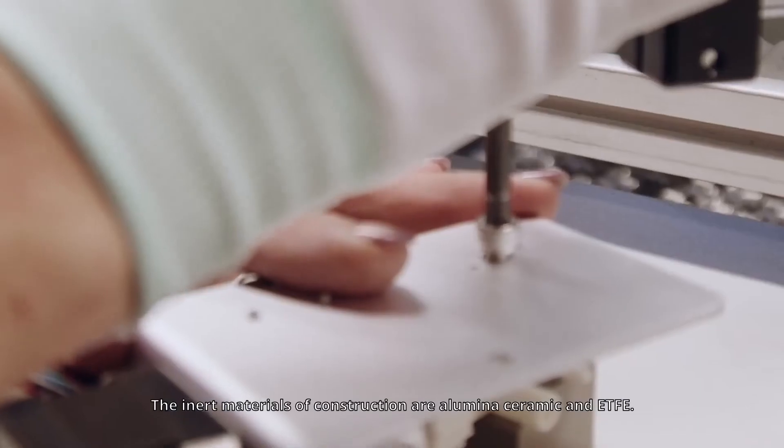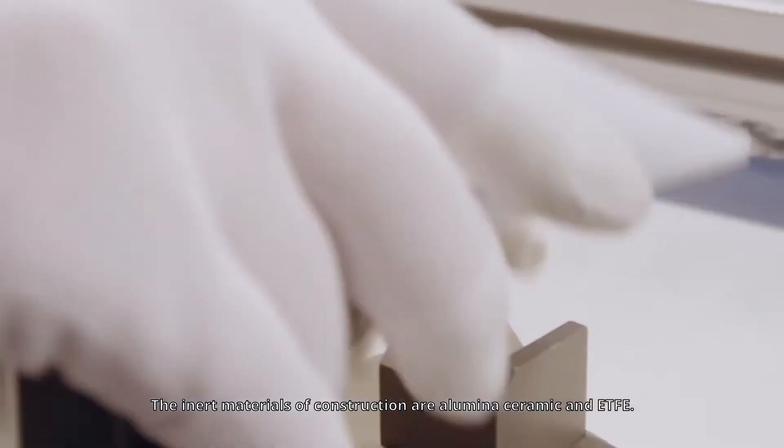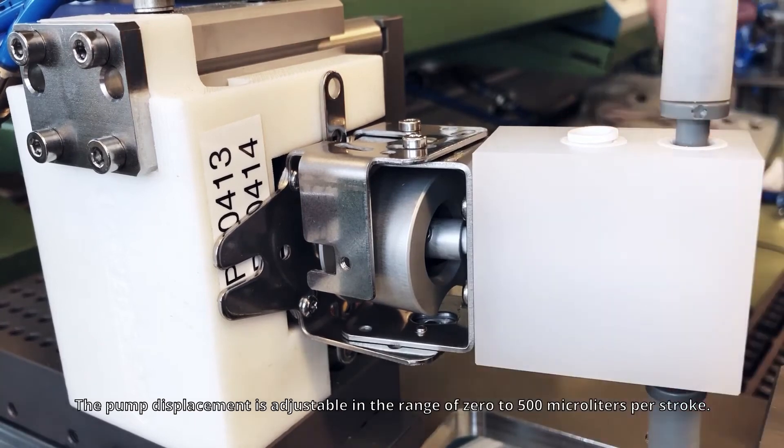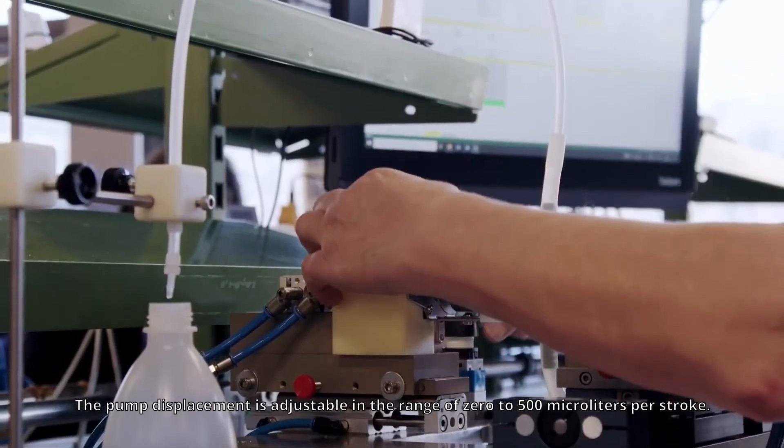The inert materials of construction are alumina ceramic and ETFE. The pump displacement is adjustable in the range of 0 to 500 microliters per stroke.